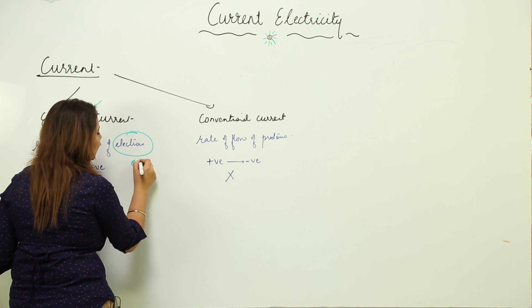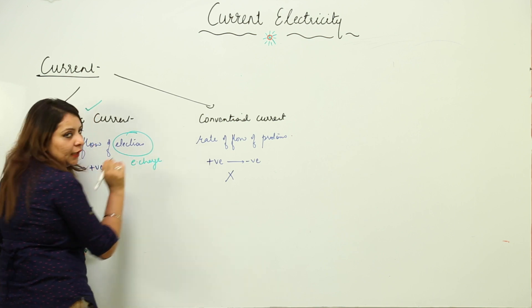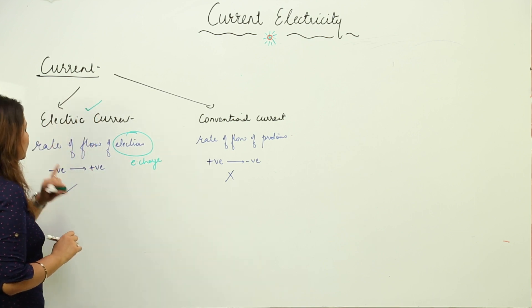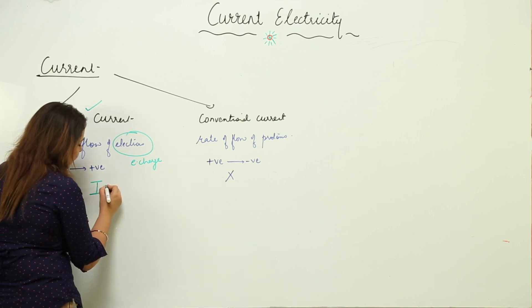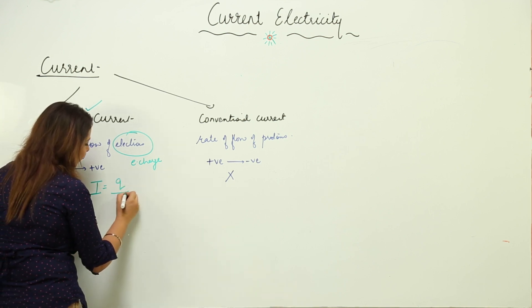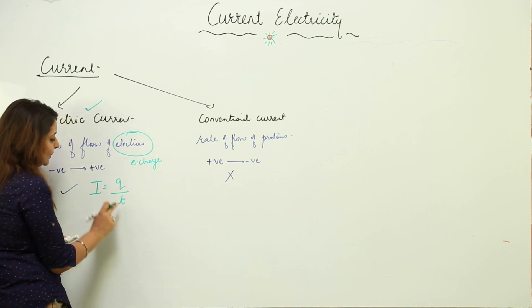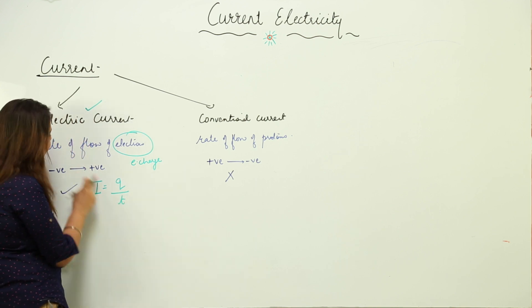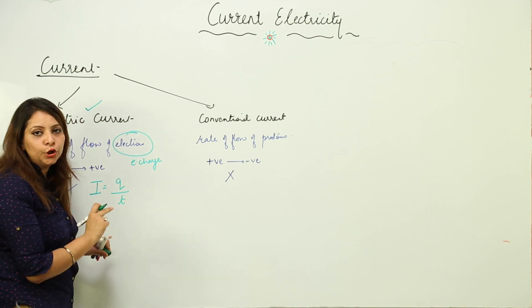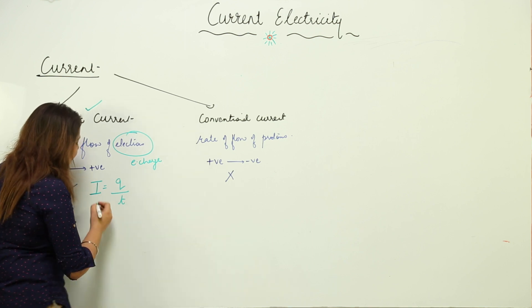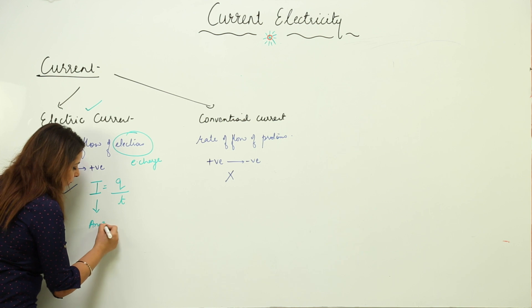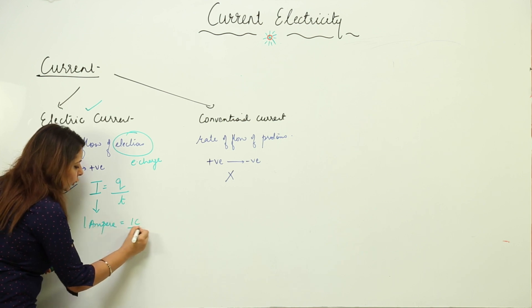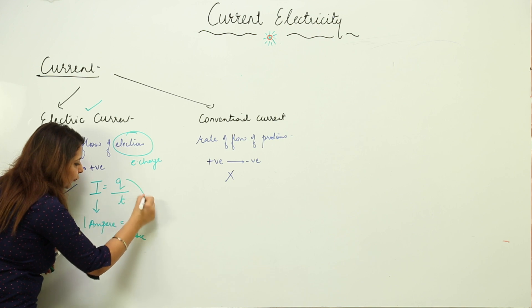We say that electric current is the rate of flow of electrons — we can also replace 'electrons' with 'electric charge'; it is the same thing. The formula for electric current is I = Q / T, where rate means divided by time and flow of charge means Q. So I = Q / T. The SI unit of current is ampere.